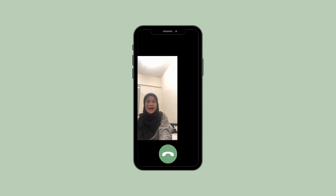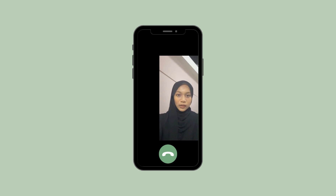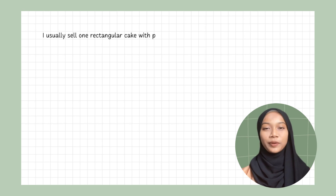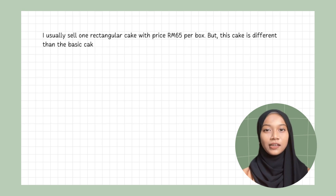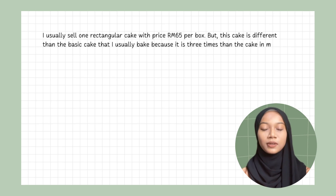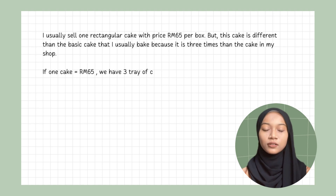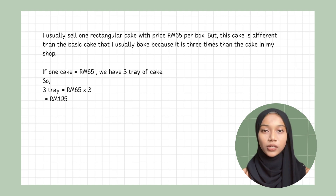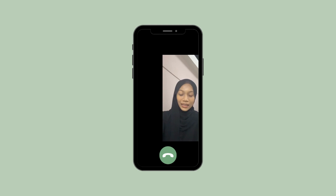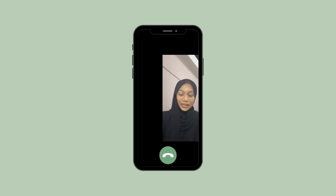Ami: How about the price? Shaq: Based on your cake, I usually sell one rectangular cake for 65 ringgit per box. But this cake is different from the standard cake I usually bake because it is 3 times bigger. If one standard cake is 65 ringgit and we have 3 trays, the price of 3 trays equals 65 ringgit times 3. This cake will also take about 2 weeks. I will inform you when it's done. Ami: Okay, Shaq. Thank you so much for helping me. I can't wait to see the cake.